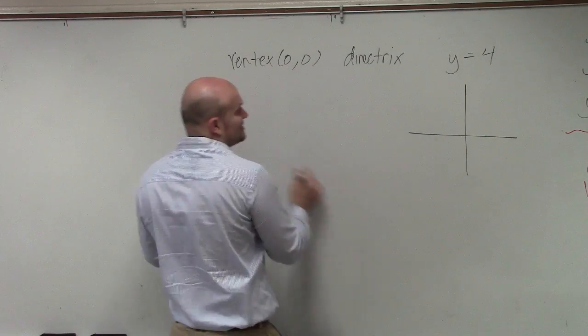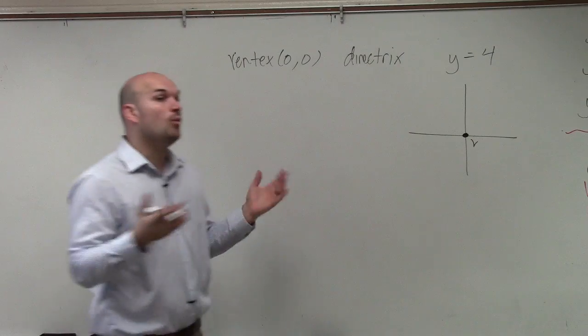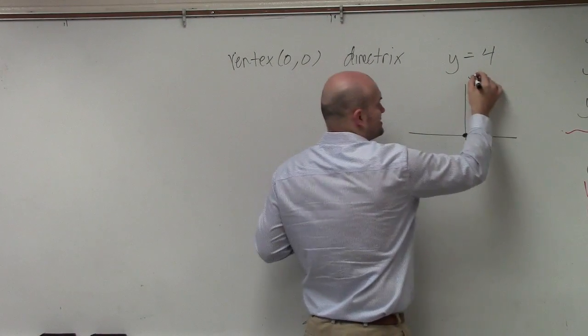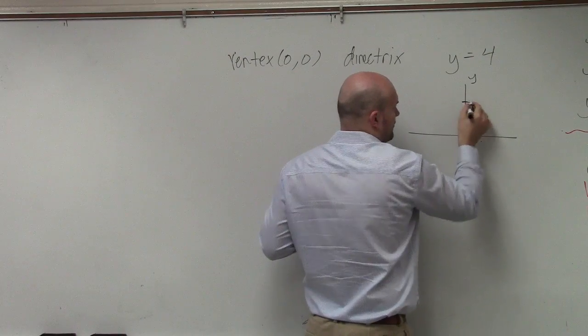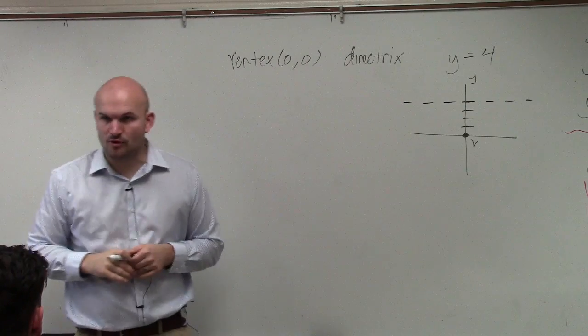So we have a vertex at 0, 0. Directrix y equals 4. What does that produce? Well, if here's my y-axis, 1, 2, 3, 4, that's going to produce a horizontal line at y equals 4.